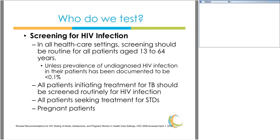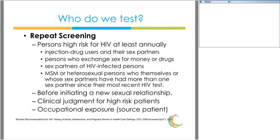Screening for HIV infection should take place in healthcare settings in the population of all patients aged 13 to 64 years, per CDC guidelines, unless the prevalence of undiagnosed HIV infection in their patients has been documented to be less than 1%. All patients initiating treatment for TB should be screened routinely for HIV infection. All patients seeking treatment for STDs should also be screened routinely. Any patients who are pregnant or present to labor and delivery without a recent history of testing should be tested.